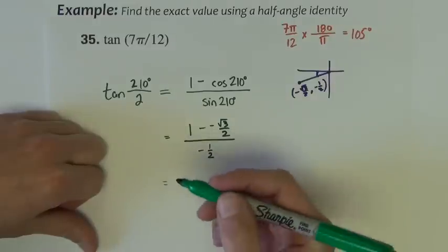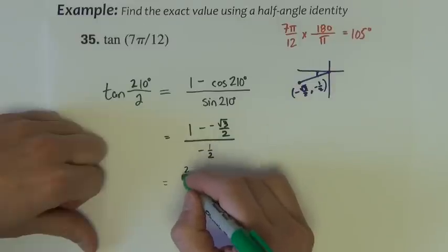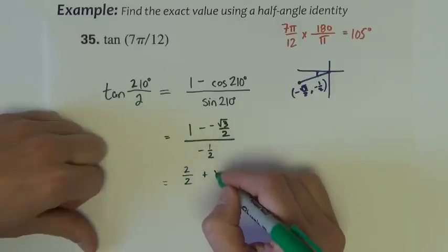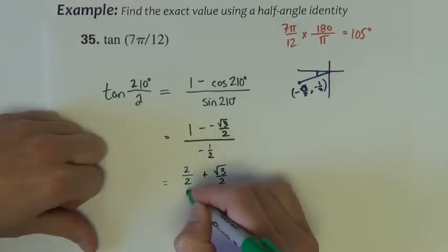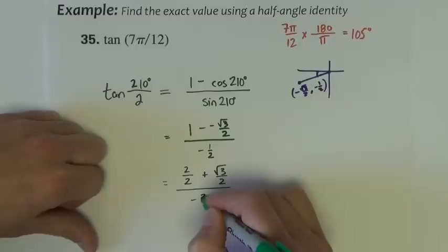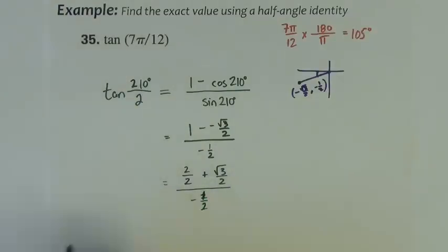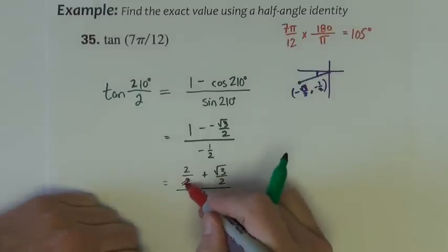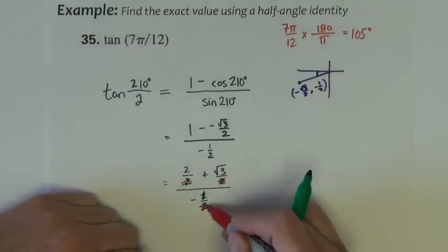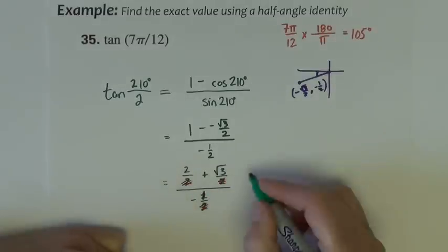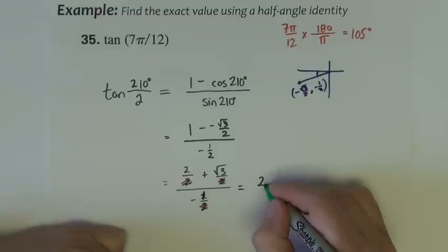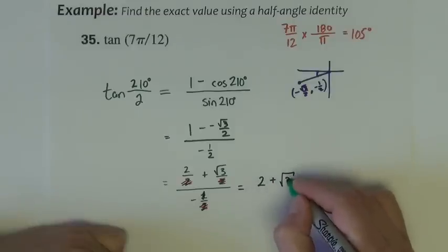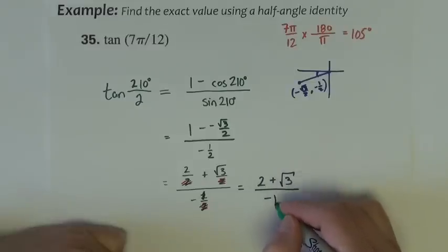I'm going to do the same trick I did on the last problem. I'm going to change the 1 to 2 over 2. And once everything is written over 2, then we can cross them all out.